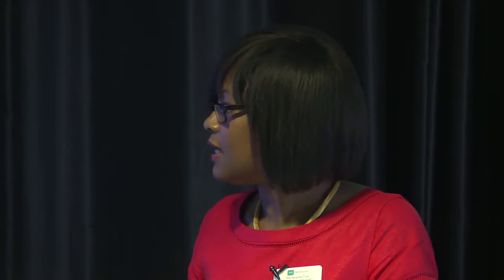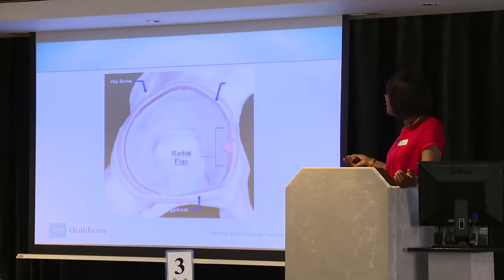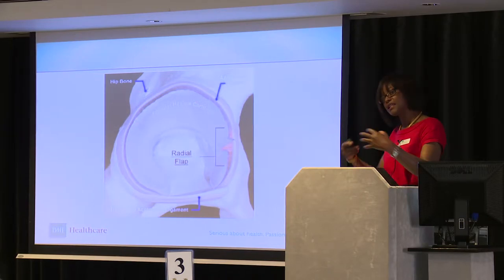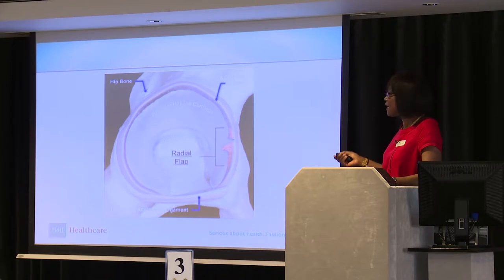Here is the acetabulum. The articular cartilage covers most of the surface apart from the very inferior aspect, where you've got the transverse ligament, and then the ligamentum teres that comes up to supply blood to the head when you're younger. When you get older, most of the blood supply comes via the capsule. The labrum is around the periphery — it deepens the socket, making it more stable, and also helps in lubrication and sharing of joint forces across the joint.